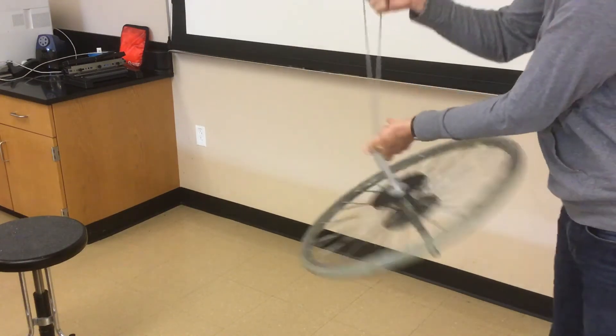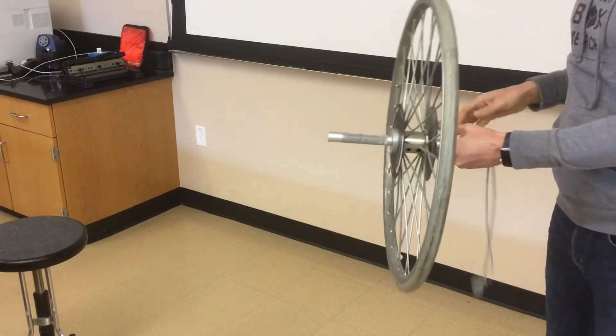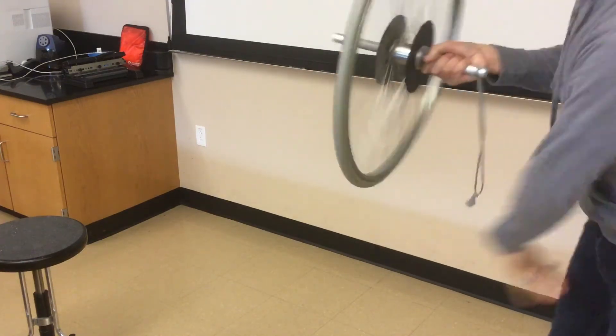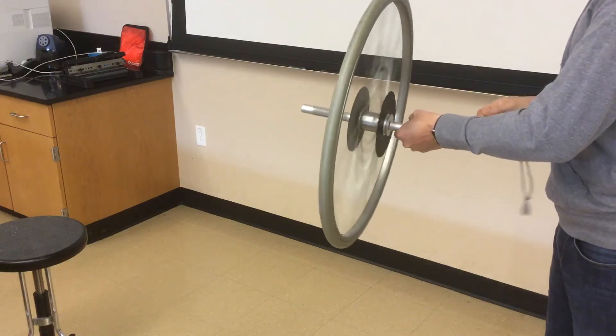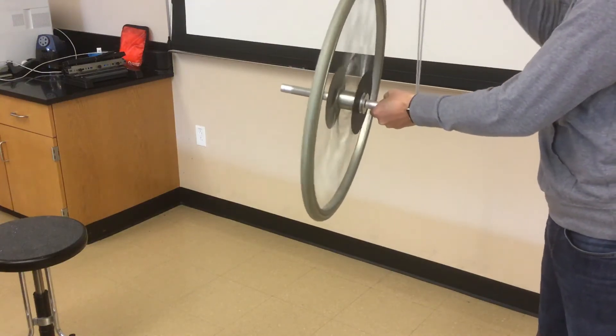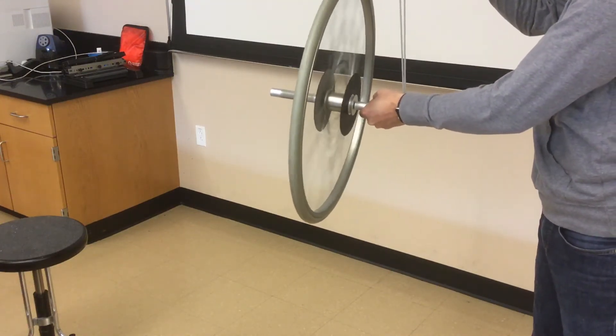There's a net torque that makes the system fall over. If I give it a spin, now it has some angular momentum it wants to conserve, and it wants to keep spinning in the vertical plane. So this time,